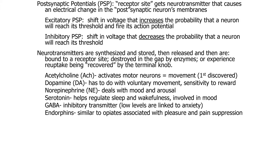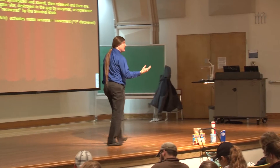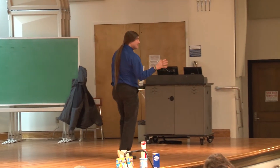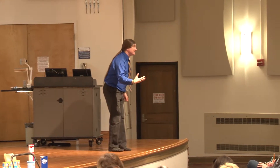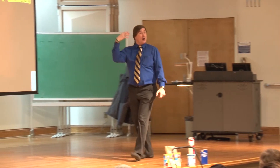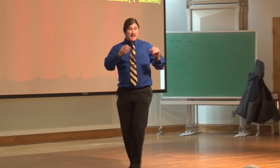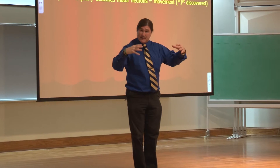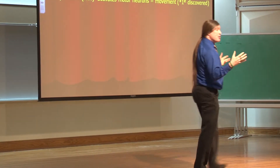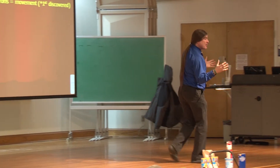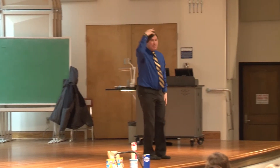Acetylcholine is involved in movement — in fact, you can't move without it. And if it's not destroyed in the gap when there's too much of it, you can't stop moving. I took a class from a brilliant pharmacologist, Dr. Floyd Domer, and he described a case of acetylcholinase being inhibited. If it has 'ase' on it, you know that's an enzyme. If you inhibit acetylcholinase, any additional acetylcholine in the synapse doesn't get broken down, meaning there's more and more of it. What you get is random, uncontrolled movement of every muscle fiber, no longer coordinated by the action of the brain.